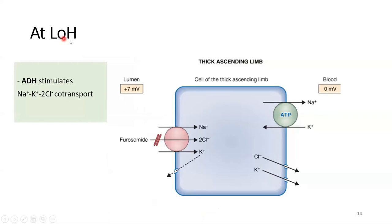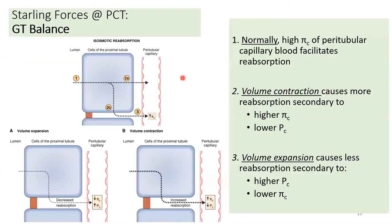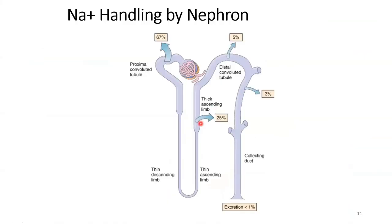At the loop of Henle, we are not much concerned with the thin descending limb or the thin ascending limb. Those thin segments deal with water and other substances, less with sodium. It is the thick ascending limb of the loop of Henle which deals with the 25% of sodium reabsorption — a significant amount. This is the segment we are discussing.